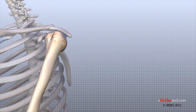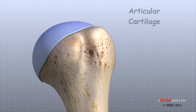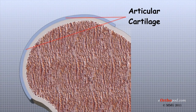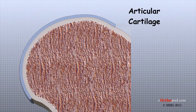Articular cartilage is the material that covers the ends of the bones of any synovial joint. It is about one quarter of an inch thick in most large, weight-bearing joints, and a bit thinner in joints such as the shoulder, which don't normally support weight. Articular cartilage has a rubbery consistency and is very slippery, which allows the joint surfaces to slide against one another with very little friction. It functions to absorb shock and provide an extremely smooth surface to make motion easier.